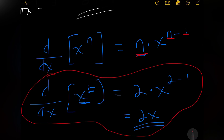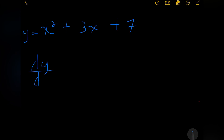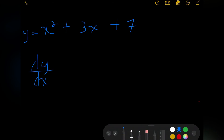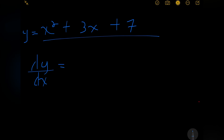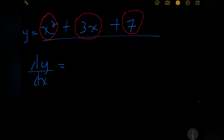So let's take a look at some examples. Say we have the function y equals x squared plus 3x plus 7, and we're supposed to differentiate this. The notation dy/dx means we're differentiating y with respect to x. As with limits, we can find the individual derivative of each term and then add them.